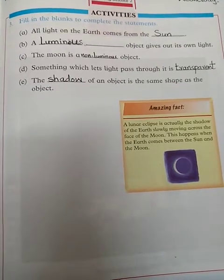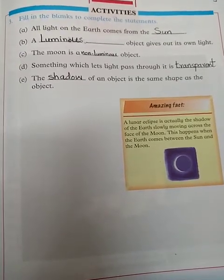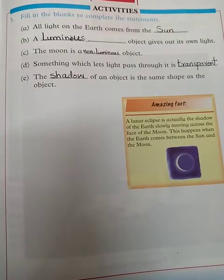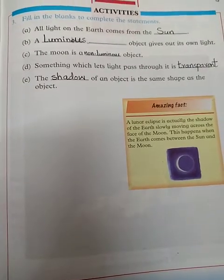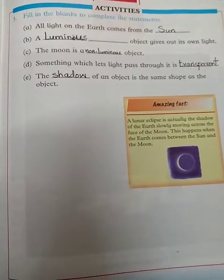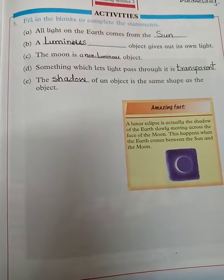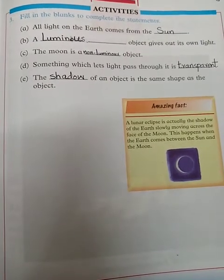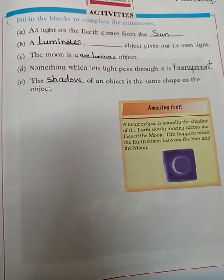For blank C: 'The moon is a ___ object.' You know that the moon has no light of its own. So it is a non-luminous object. Write 'non-luminous' in the blank.